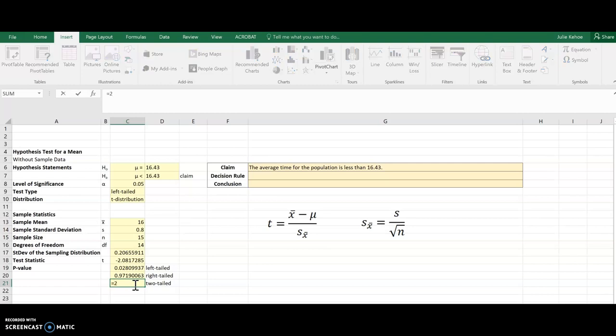The other option is to take two times the min of these two. Whichever the smaller one of the two is, is going to be one of the two tails I need. So if I just double it, that will also give me the two-tail value. So there it is.